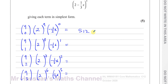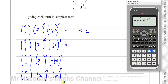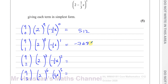This first term has x to the power of zero, so there's no x term written. The second term will be the x term. I change the setup to nine C one, 2 to the power of eight, and (minus one-third) to the power of one. Because it's minus one-third to the power of one, the result is negative — it gives negative 768. There's an x term now. The next will be the x squared term.